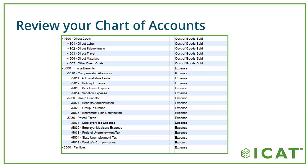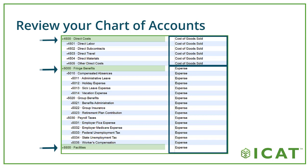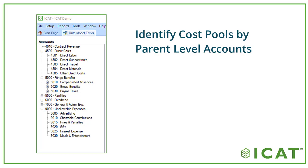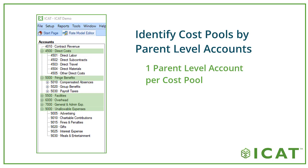iCAT identifies your cost pools according to the account hierarchy in your QuickBooks Chart of Accounts. iCAT recognizes any cost of goods sold or expense type account that sits at the root level of the parent account-subaccount hierarchy as a cost pool. Each cost pool in your cost allocation policy — whether it is a direct, indirect, or unallowable cost pool — must be identified using a parent-level account. There should be only one top-level account for each cost pool.